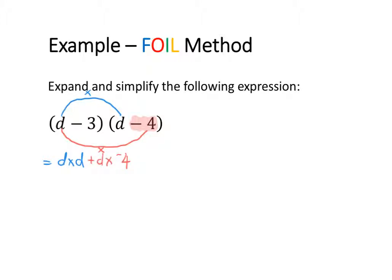Then my two inside terms are multiplied together. And remember, when I'm looking at my second term, I need to look at the sign in front. So that is going to be plus negative 3 times d. And then the last step is looking at my two last terms and multiplying them together, so plus negative 3 times negative 4.